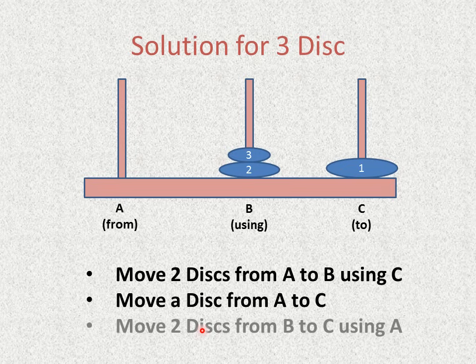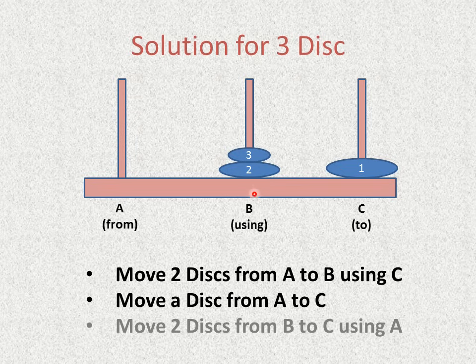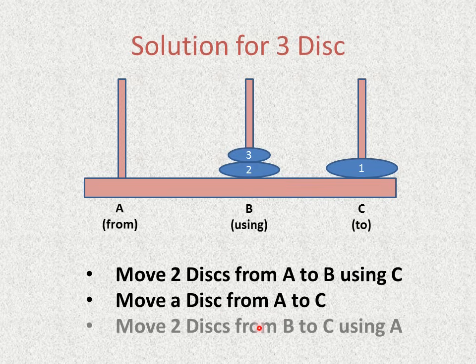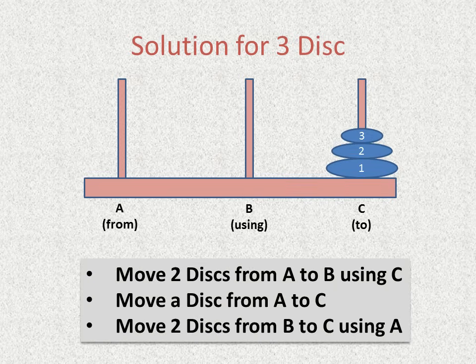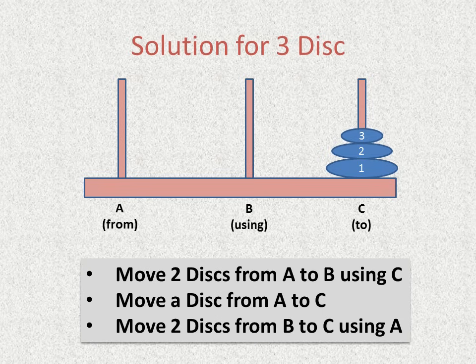Then third step is move two disc from B to C. These two disc we have to move from B to C using A. Again this is recursive step. How to move these two disc from this tower to this tower already we have seen. So this is recursive step. And finally this is done. Now these three steps are very important for devising a recursive procedure for tower of hanoi problem.